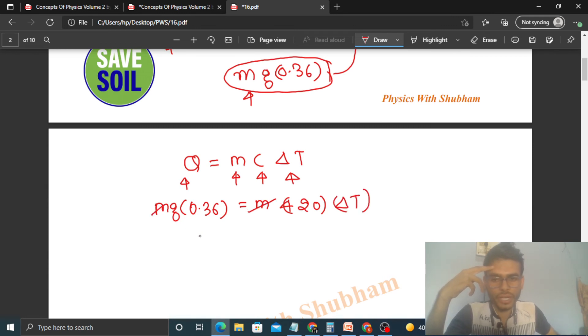So m gets cancelled, g's value take as 10, so it will be 3.6 divided by 420. That is the value of increase in temperature. So numerical value you can find out yourself.